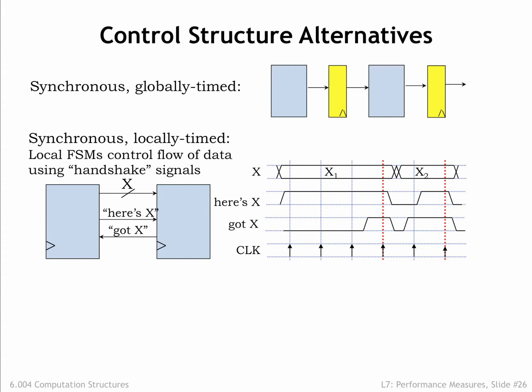It's fun to design a simple two-signal handshake protocol to reliably transfer data from one stage to the next. The upstream stage produces a signal called here's X to indicate that it has new data for the downstream stage, and the downstream stage produces a signal called got X to indicate when it is willing to consume data. It's a synchronous system, so the signal values are only examined on the rising edge of the clock.